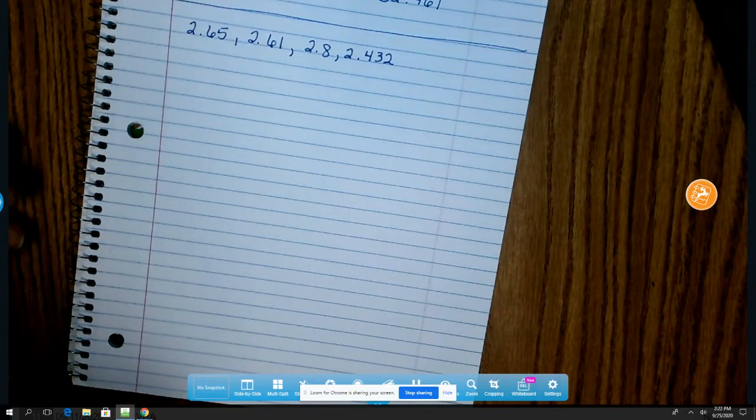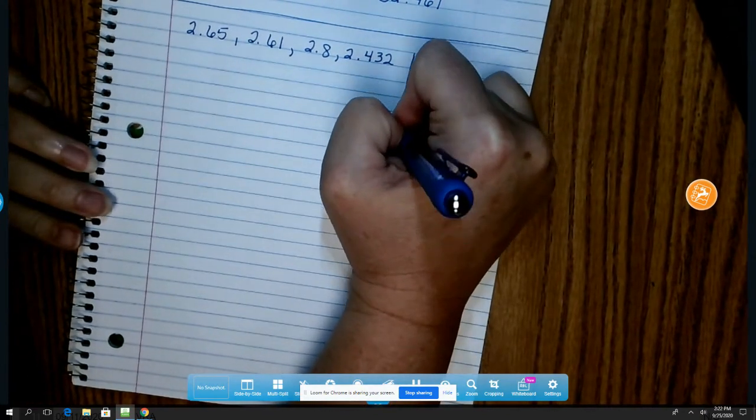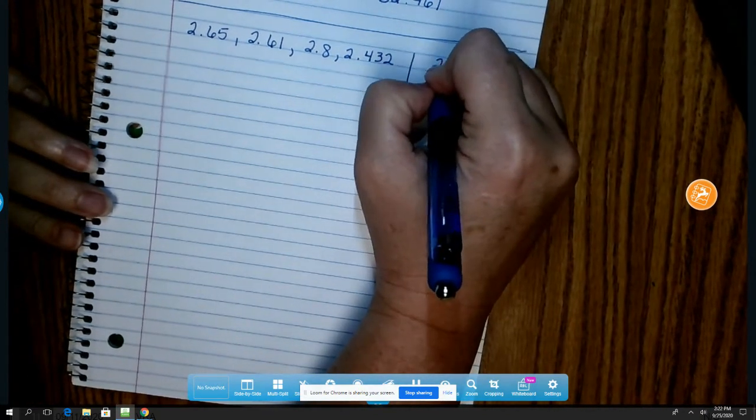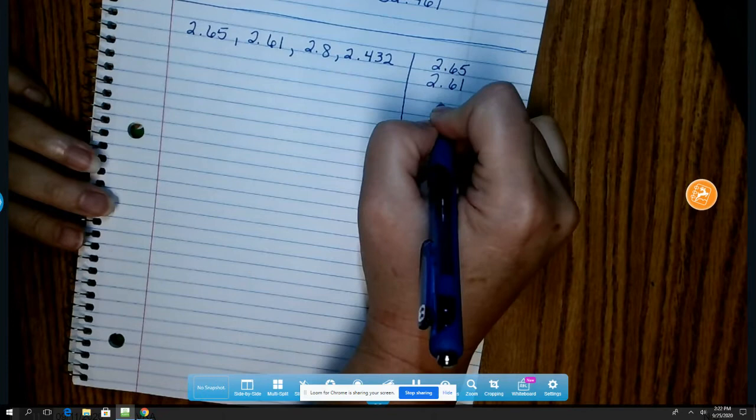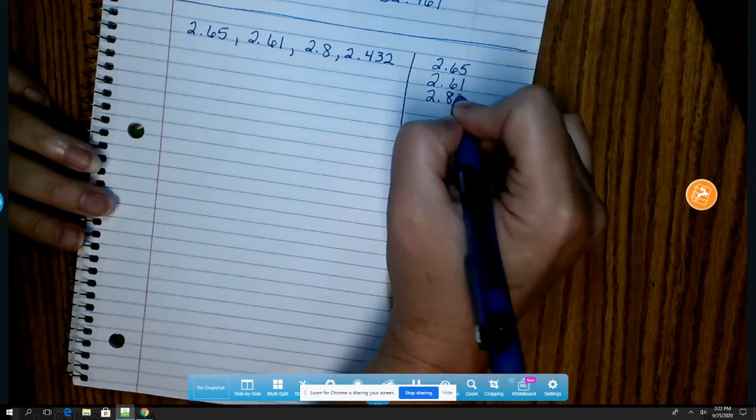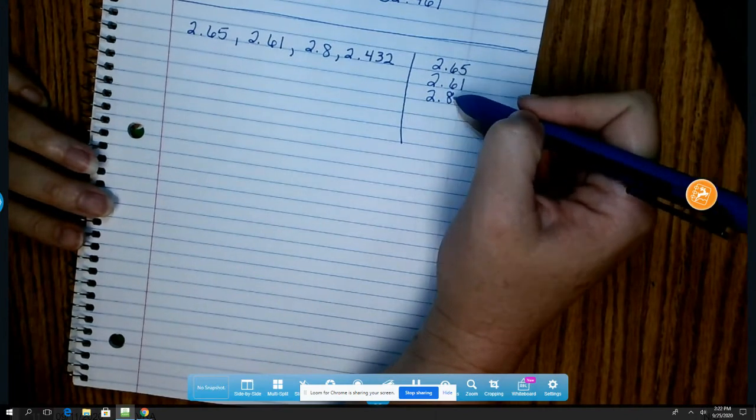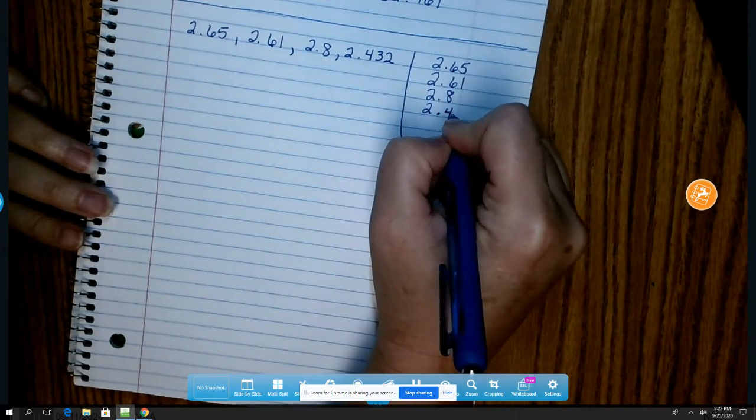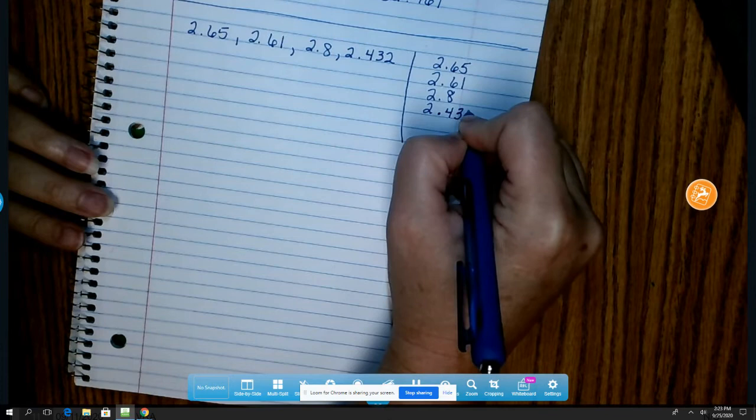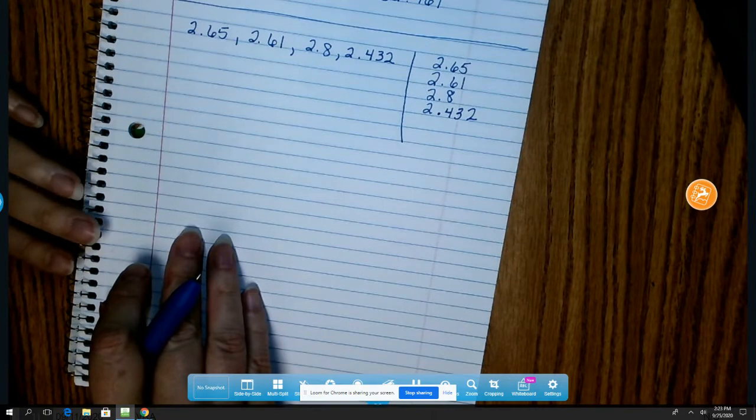Some people, however, find it easier to compare these numbers if they write them vertically in a column. So over here, that's what I'm going to do. It's helpful if I keep them in rows. If I make sure that my decimals stay in a line, then I know that these will stay in a line. When they're not kept in neat rows, it can become very confusing. So that's a little tip to help you out.